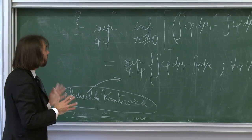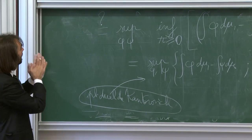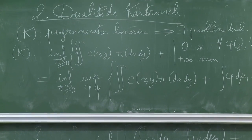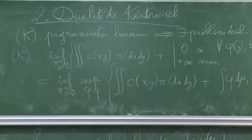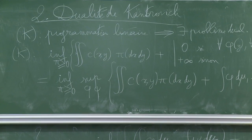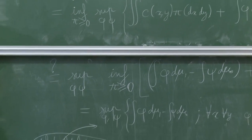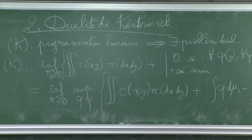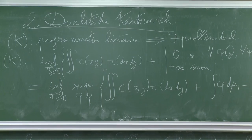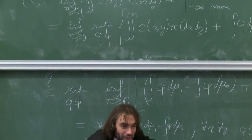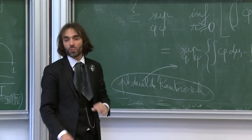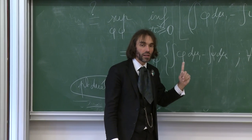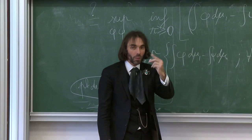Le transporteur cherche à maximiser son profit total ∫φ dμ_1 − ∫ψ dμ_0, tout en proposant des prix compétitifs. Cette contrainte rappelle la dualité de Legendre : c(x,y) ≥ φ(y) − ψ(x) ressemble à l'inégalité de Fenchel x·y ≤ φ(x) + φ*(y). On va étudier cette dualité sur les fonctions avant d'énoncer le théorème de dualité de Kantorovich.